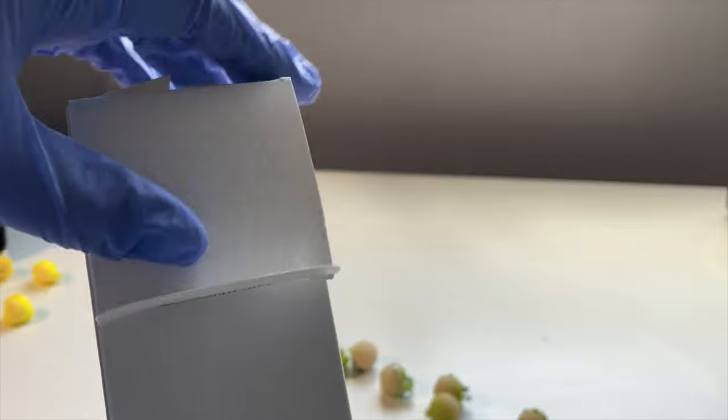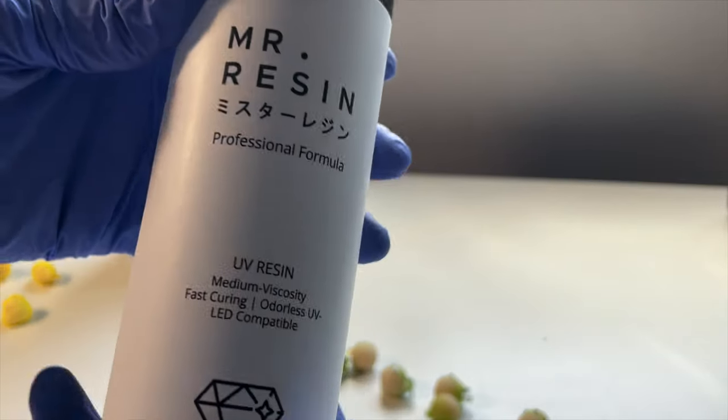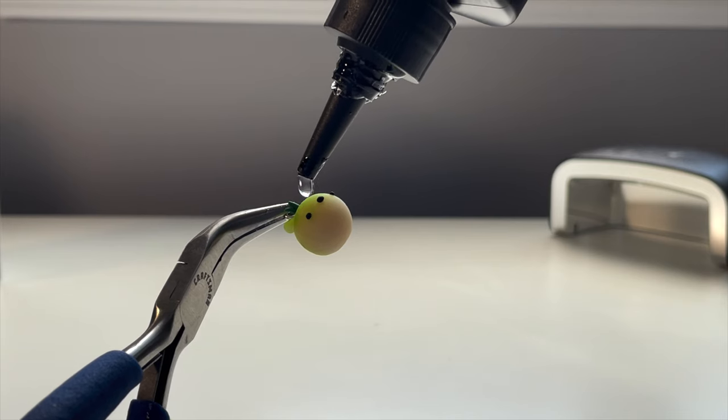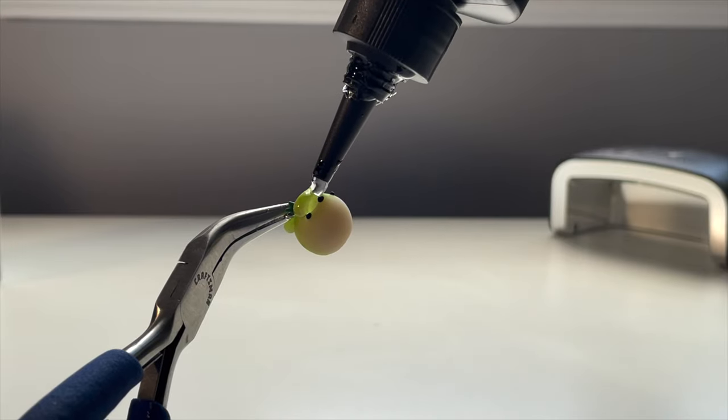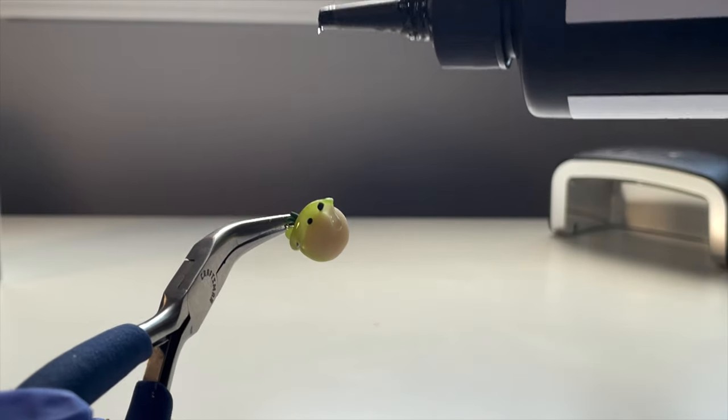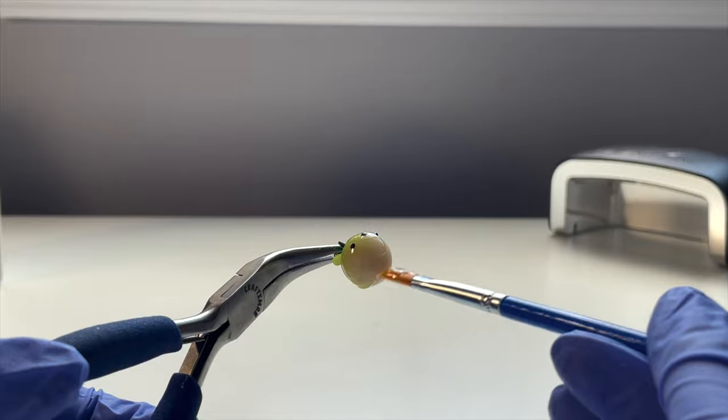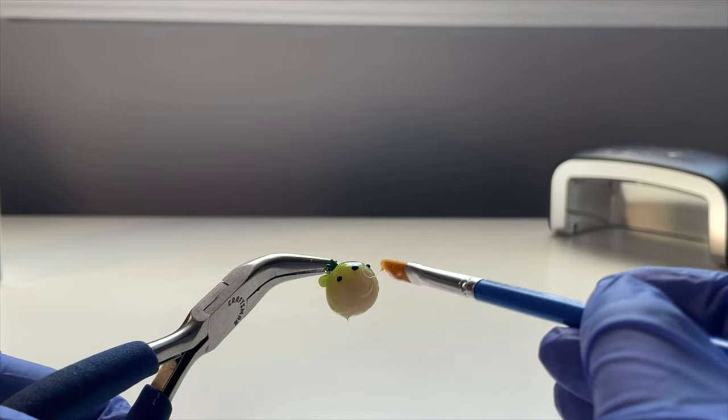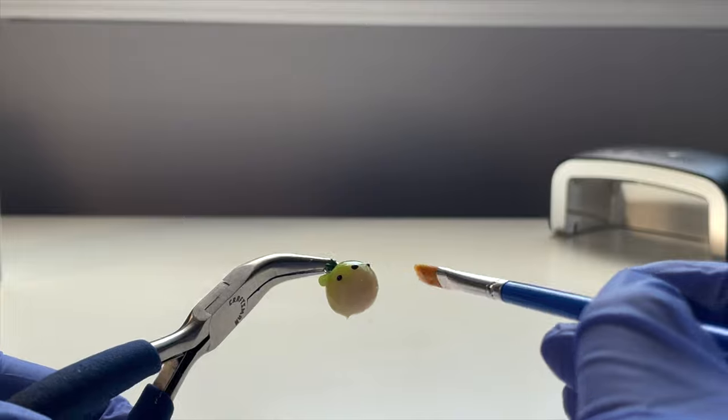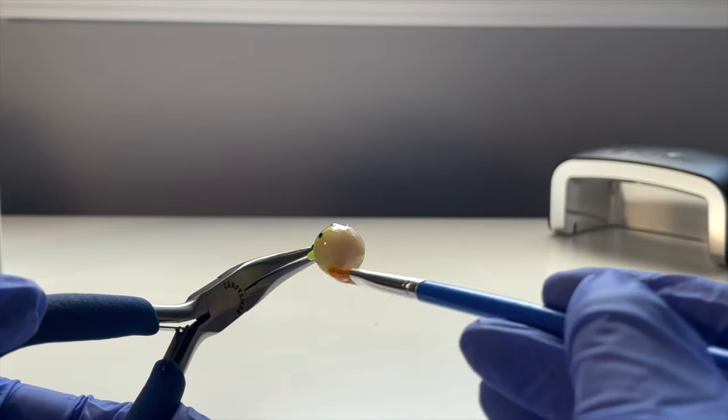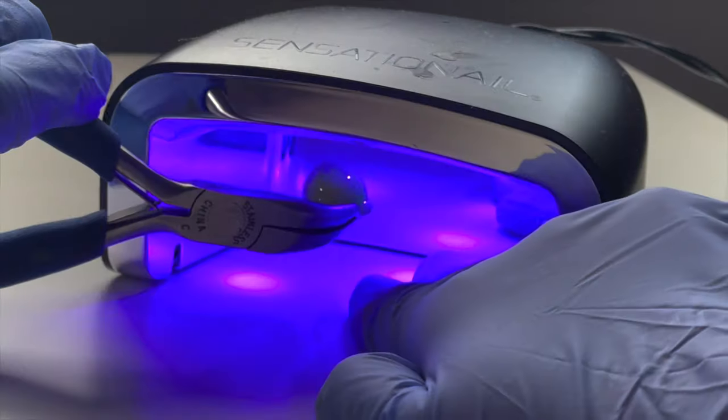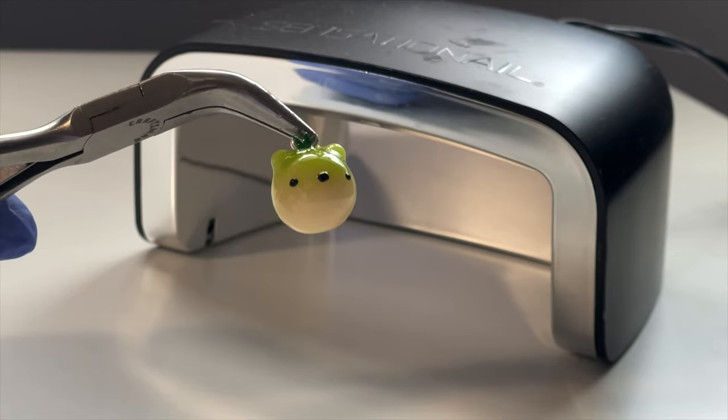So I started using this Mr. Resin for all my charms lately, and it is so incredible. It's so easy to work with. It cures so fast. The only thing is if I'm doing it in the sunlight, it cures very fast. So I need to make sure that I get it on and I spread it around pretty quickly so that I don't get any lumps or bumps in it.